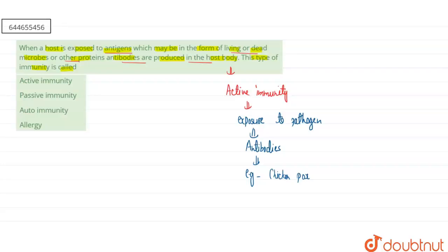We can take other examples also. If you are talking about our second one, that is passive immunity, so passive immunity means we are providing ready-made antibodies to the person.